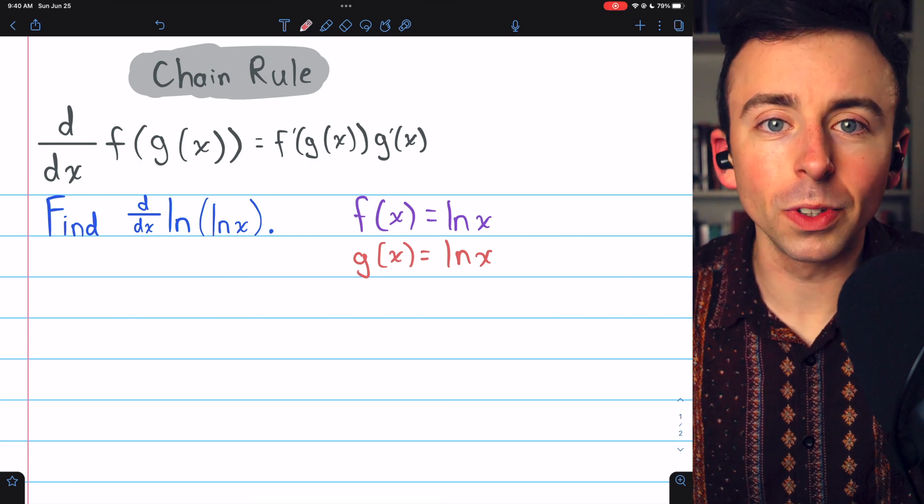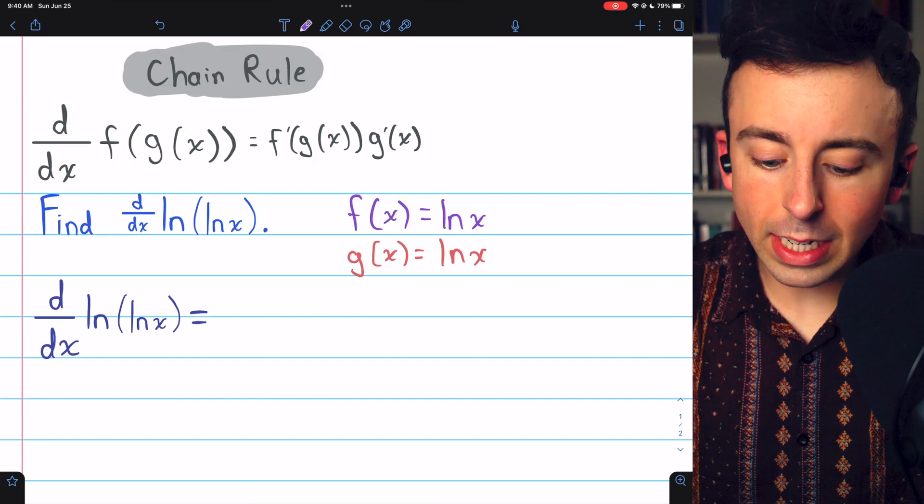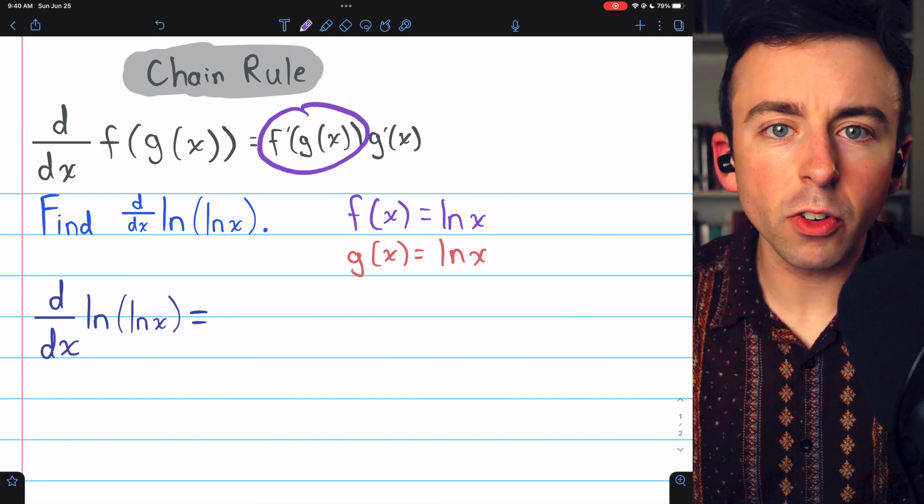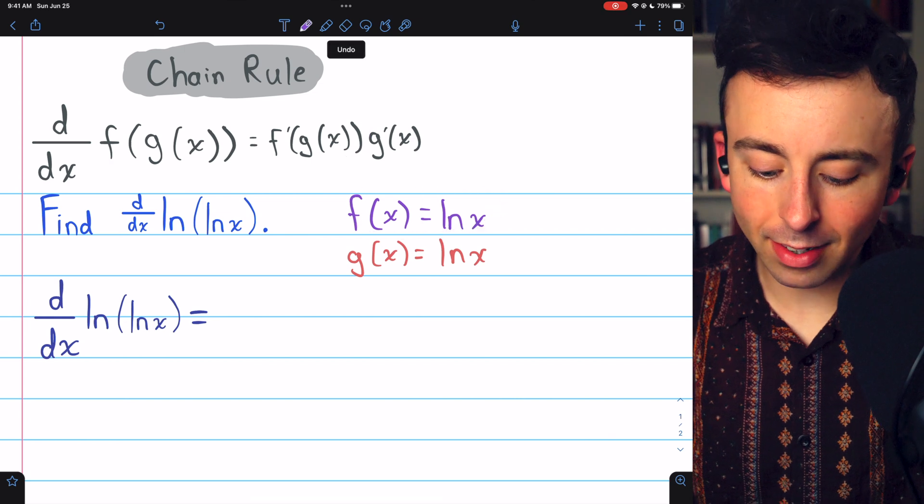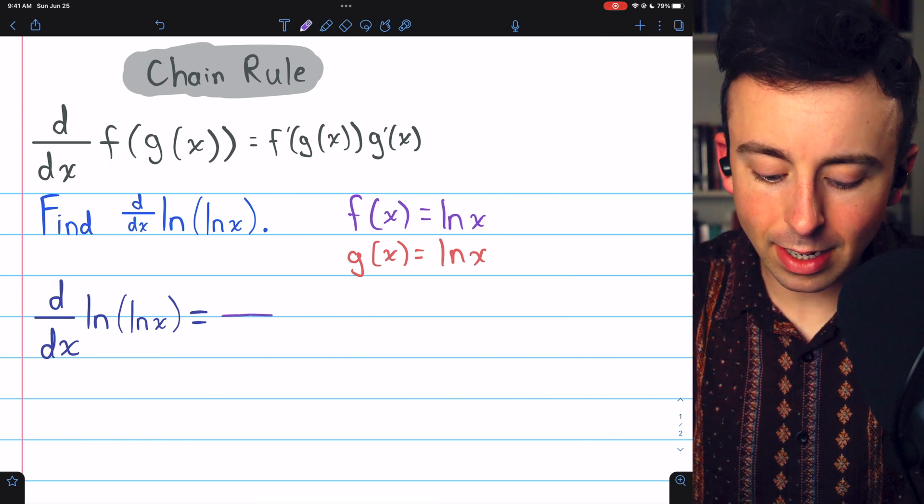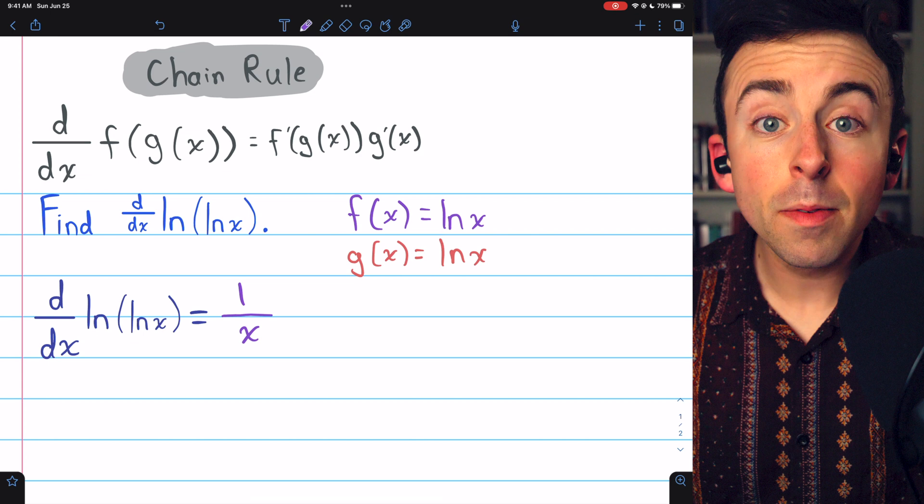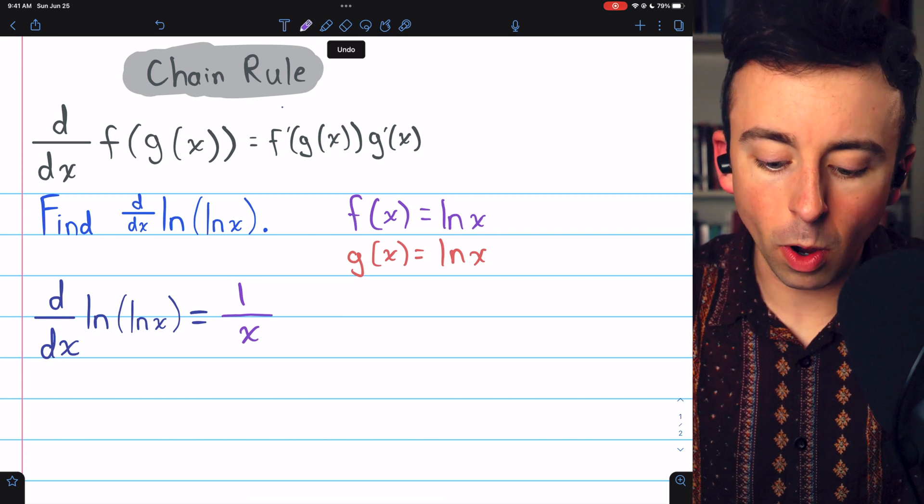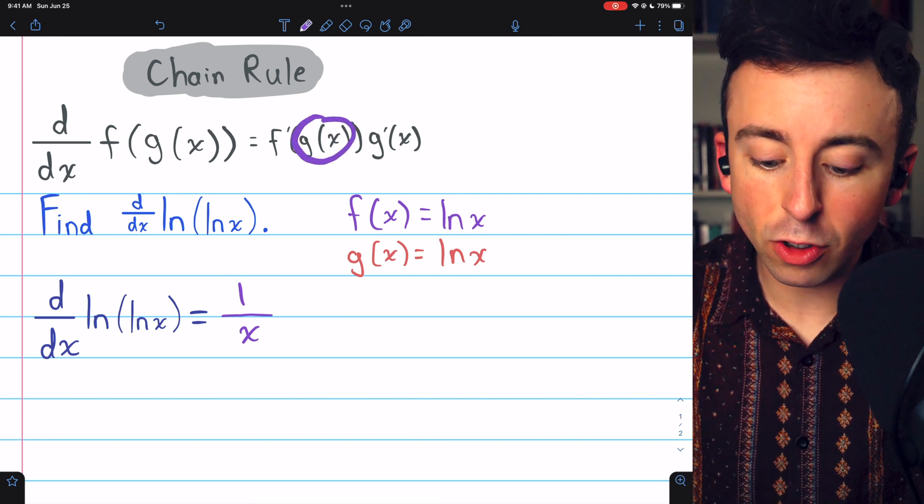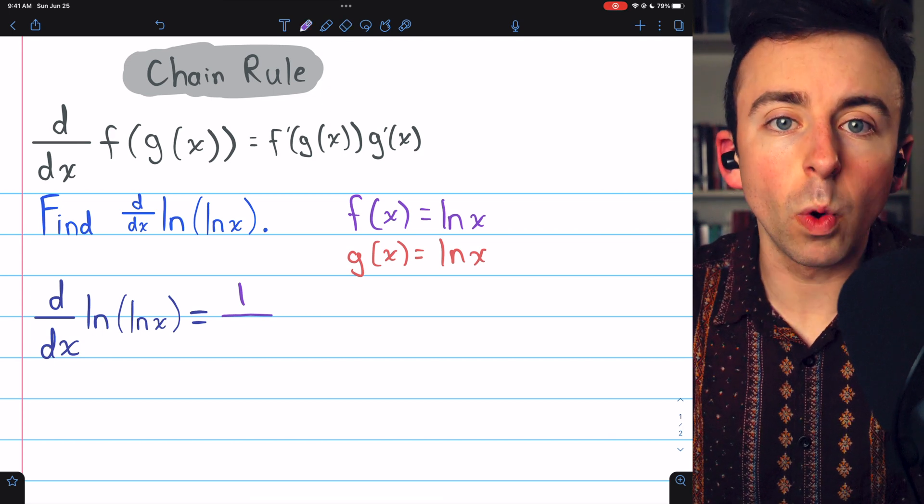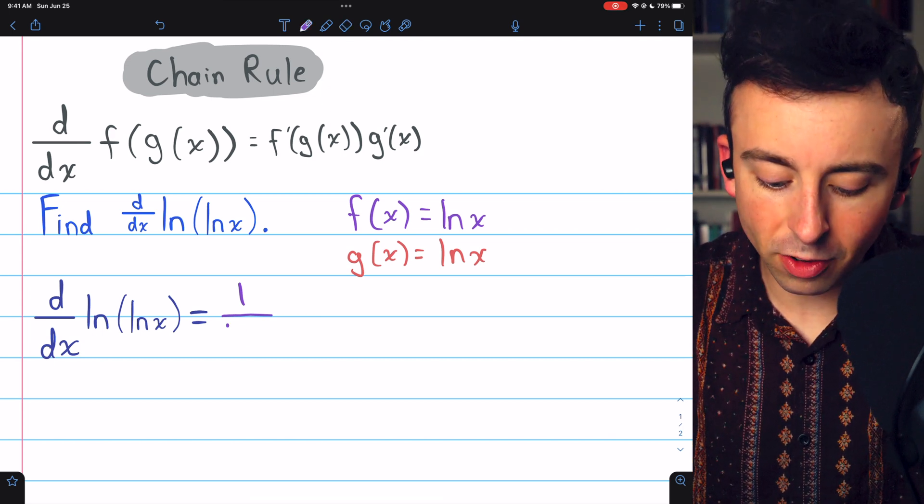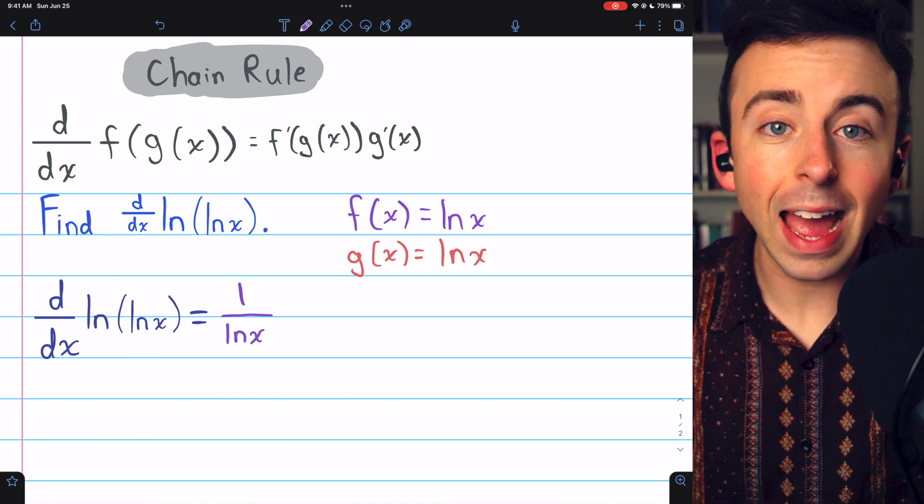Now let's use the chain rule to take the derivative. First, we need the derivative of the outside function evaluated at the inside function. The outside function is ln(x), and the derivative of ln(x) is 1 over x. But it's not x that we want in the f prime, it's g of x that we want in the f prime. So it should actually be 1 over the inside function, 1 over ln(x).